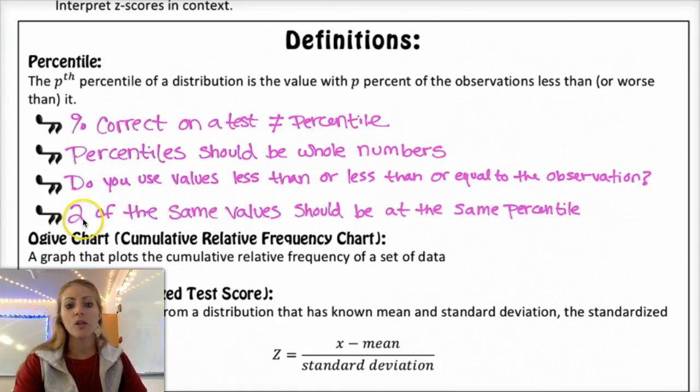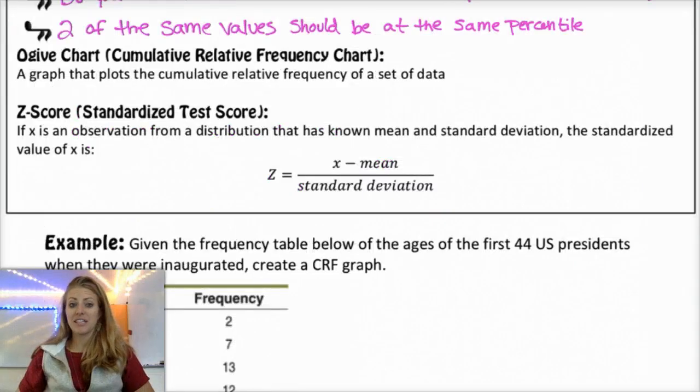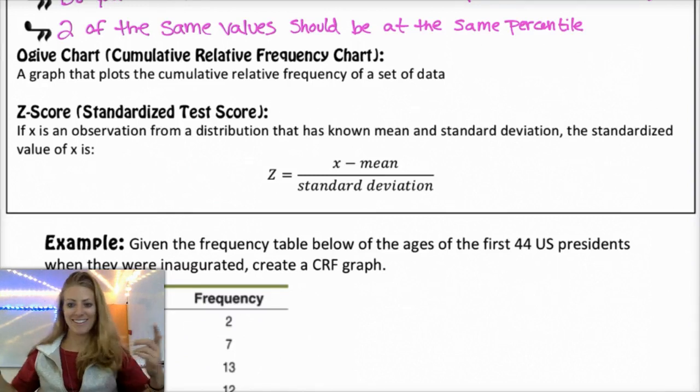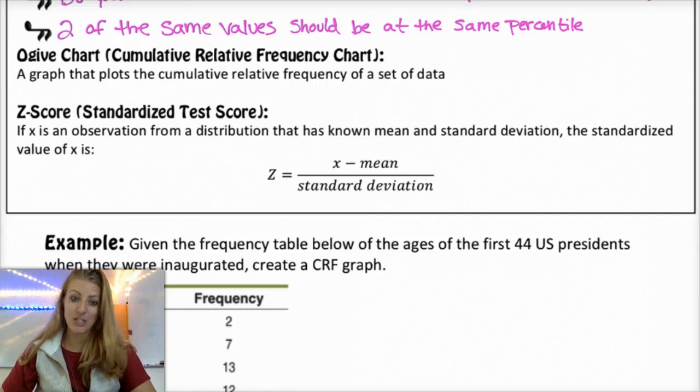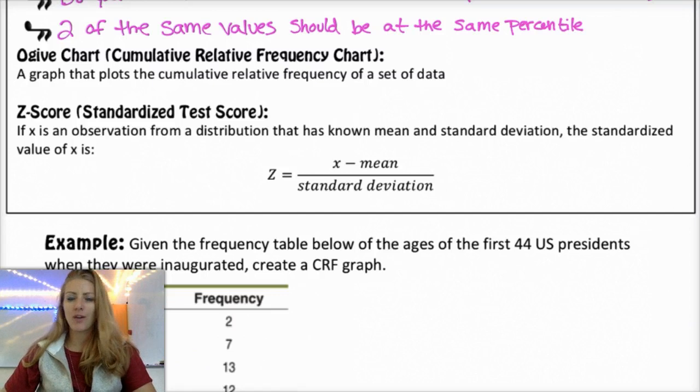And last but not least, two of the same values should be at the same percentile. So if you and your friend get an 85, then you should both be at the same percentile because one of you is not above the other. Next is the Ogive chart. Not really sure if it's Ogive or Ogive, but I've heard it both ways, I'm just going to call it an Ogive because I like to jive.